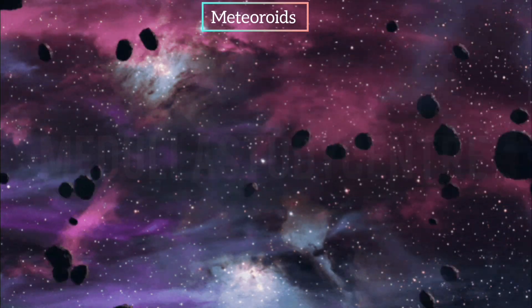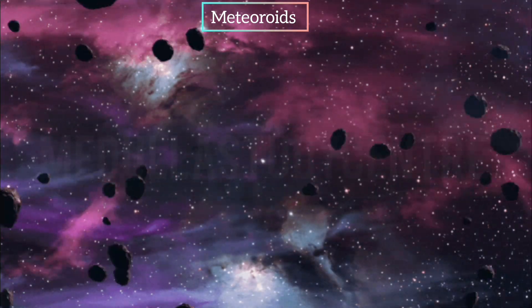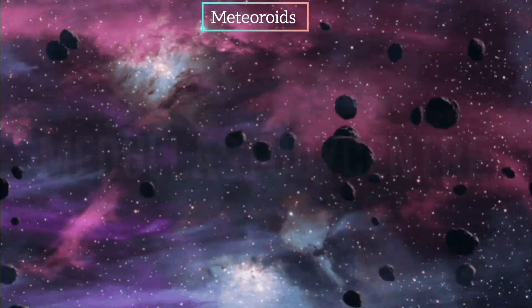What is meteoroids? The small pieces of rocks which move around the sun are called meteoroids.